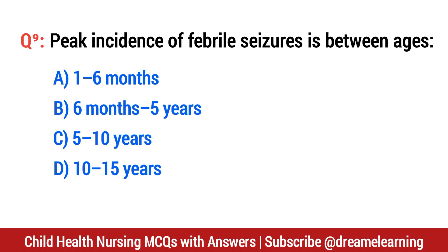Question number 9. Peak incidence of febrile seizures is between ages? The right option is B: 6 months to 5 years.